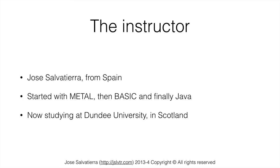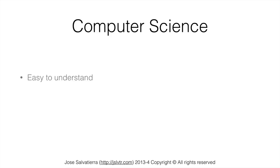Let's talk about computer science, which is what this course is all about. Computer science is easy to understand, which means none of the concepts are really complicated, I believe. The problem with the concepts is that some of them require a bit of work to implement, take some time, and some of them are a bit more abstract than others. But if you understand the basics, which I will teach you in this course, moving on will be quite easy.